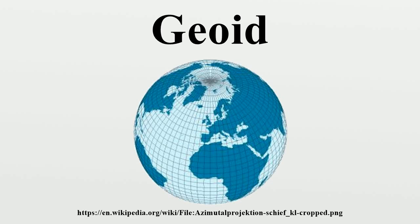Spirit levels will always be parallel to the geoid. Note that a GPS receiver on a ship may, during the course of a long voyage, indicate height variations, even though the ship will always be at sea level. This is because GPS satellites, orbiting about the center of gravity of the Earth, can only measure heights relative to a geocentric reference ellipsoid.